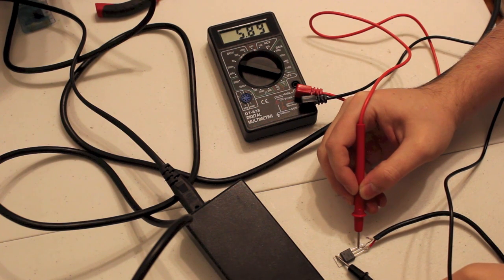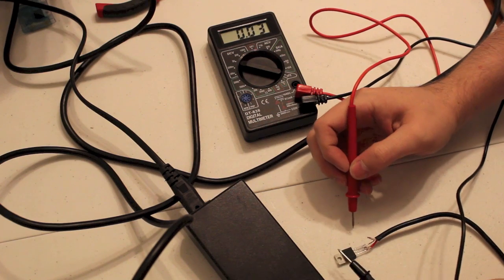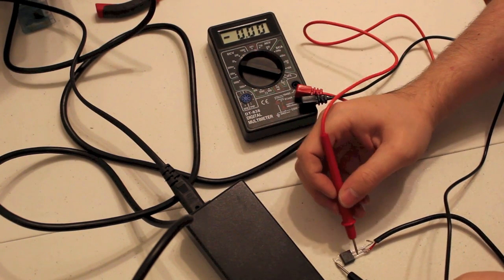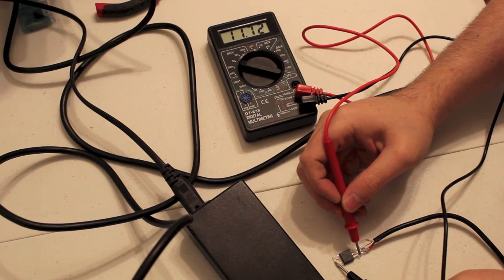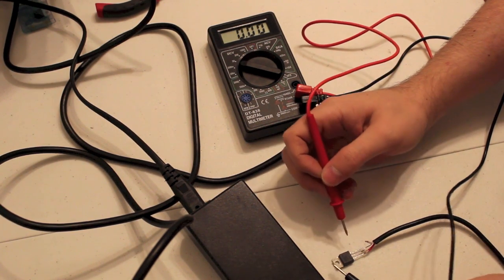As you can see there, we're getting about 5.89, which is very close to 6. And on the end, just short of 12. And the middle is ground.